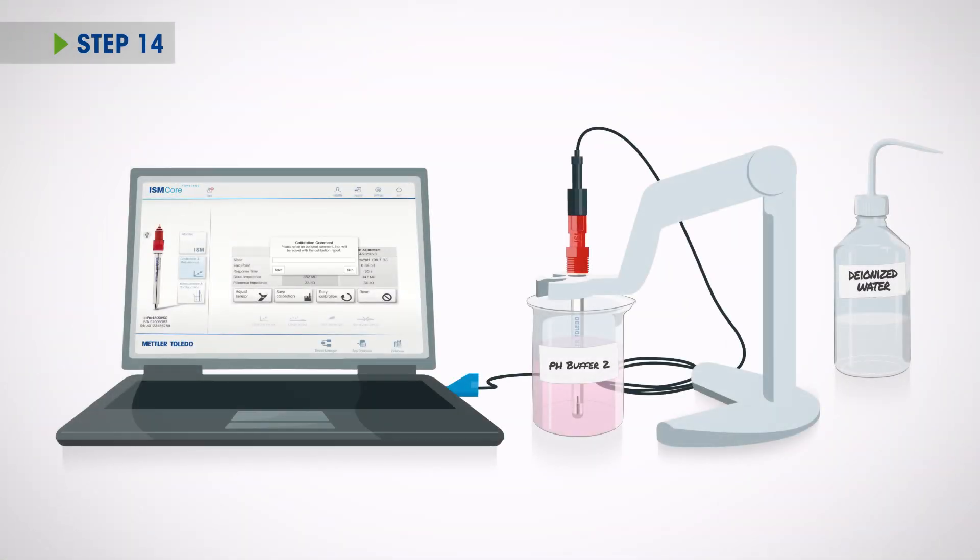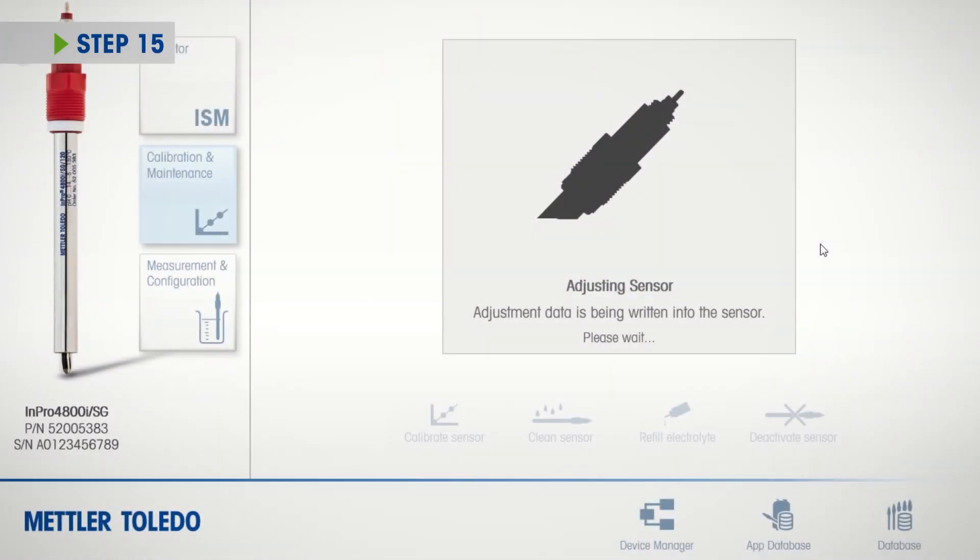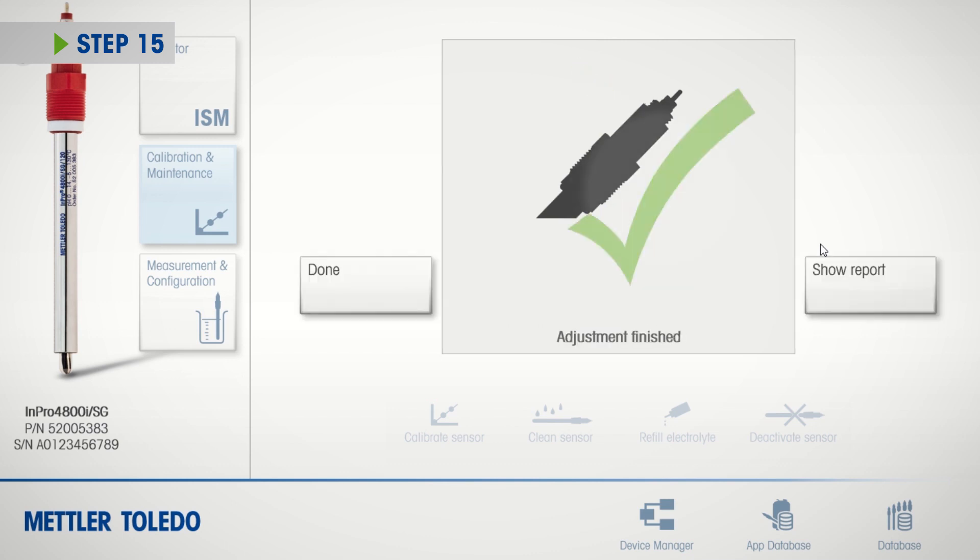After confirmation of successful calibration, click Adjust Sensor and follow further on-screen instructions. When the adjustment is finished and calibration information has been transferred to the sensor, a checkmark and Adjustment Finished will appear.